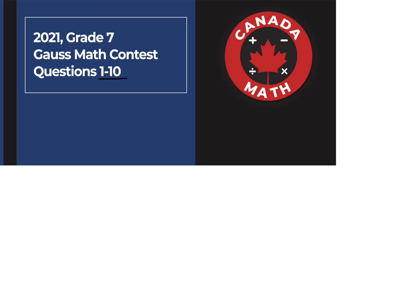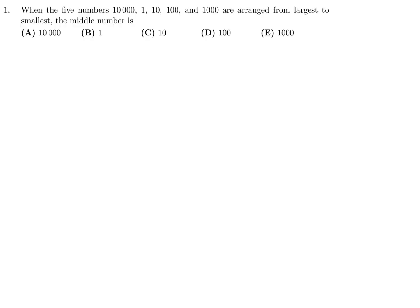Questions 1 through 10 on the 2021 Grade 7 Gauss Math Contest. When the five numbers 10,000, 1, 10, 100, and 1,000 are arranged from largest to smallest, the middle number is.